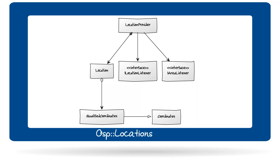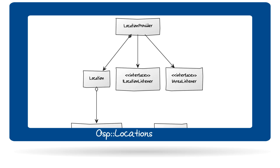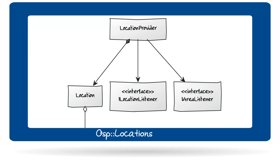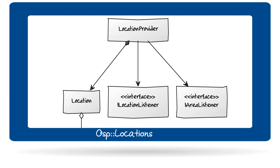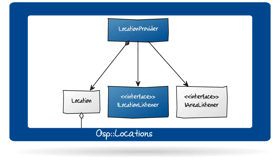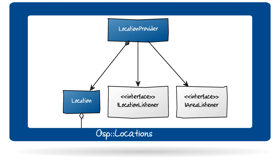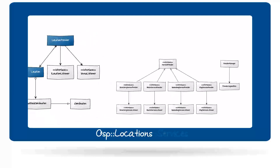With the LocationProvider class of the Locations namespace you can define the source of your position — for example from the built-in GPS sensor. The LocationProvider class inherits from the interface ILocationListener, which listens to location update events. The Location class, representing the actual location information, is part of the LocationProvider class, forming a compositional relationship.